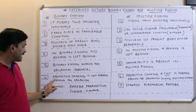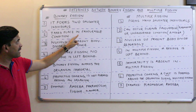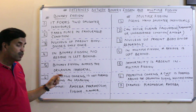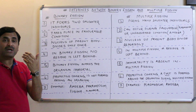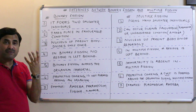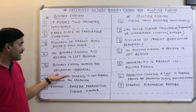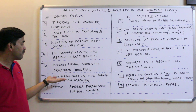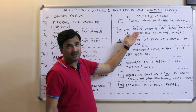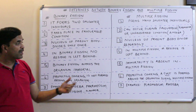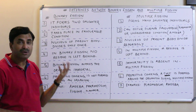One more point: a protective covering is not found in organisms undergoing binary fission, because binary fission occurs in favorable conditions. Since protective coverings are formed to resist unfavorable conditions, and there are no unfavorable conditions in binary fission, no protective covering is formed. In multiple fission, which generally occurs in unfavorable conditions, a protective covering known as the cyst is formed around the organism.